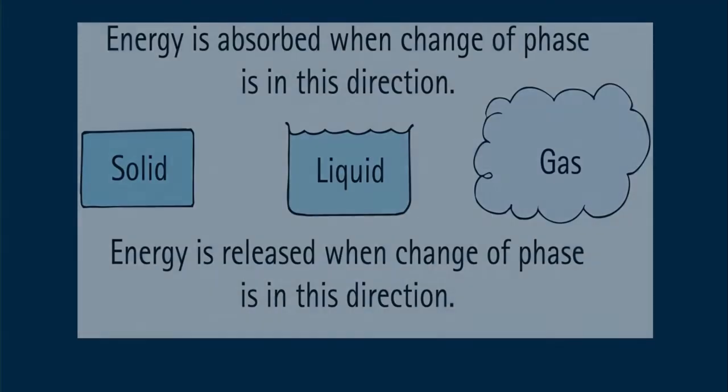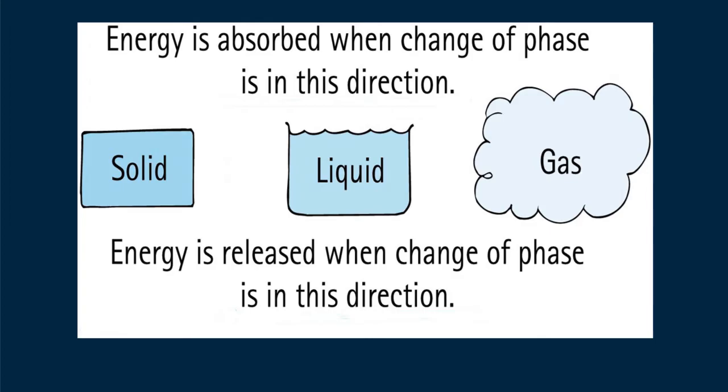Energy is required to change the phase of matter. If we add enough heat to a solid, it will eventually change phase to a liquid, or adding enough heat to a liquid will eventually change its phase to a gas. Energy is needed for this change. Conversely, energy must be extracted from a substance to change its phase in the direction from gas to liquid to solid.